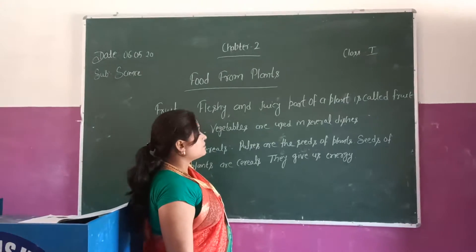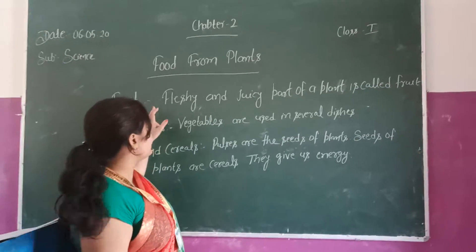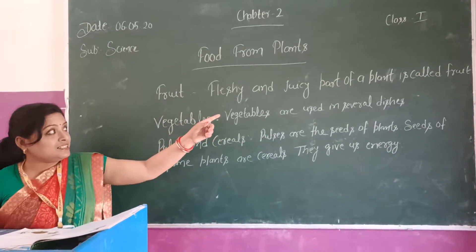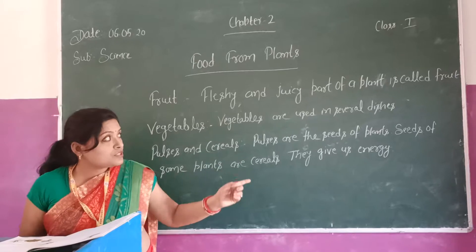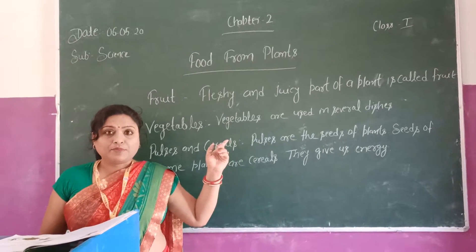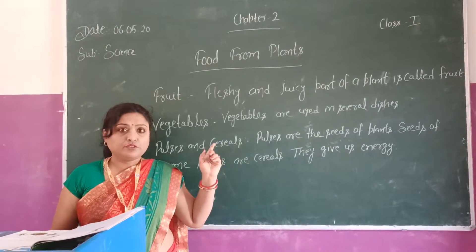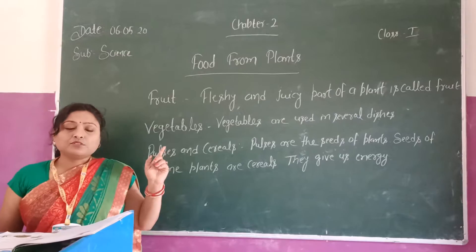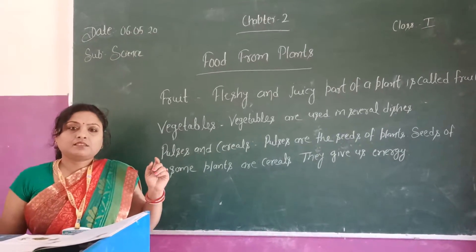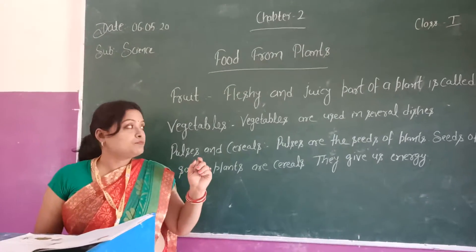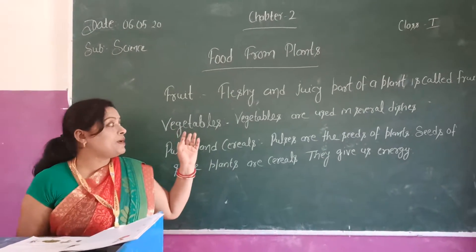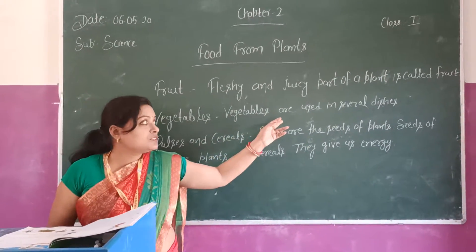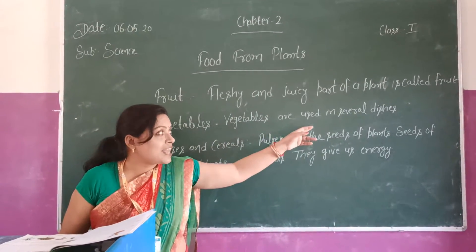Fruits are fleshy and juicy part of a plant. Mango and orange are fruits. Vegetables are used in several dishes.